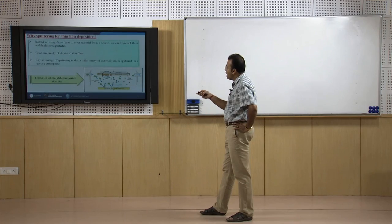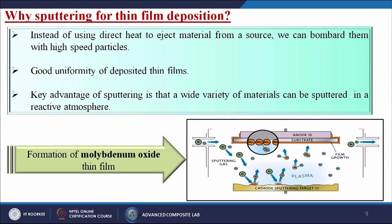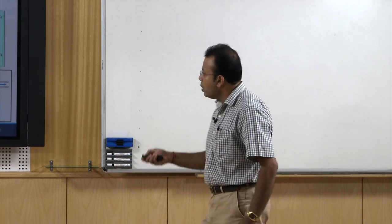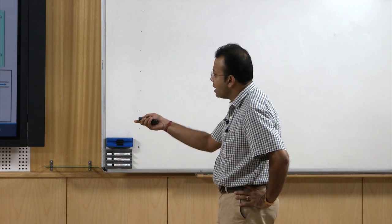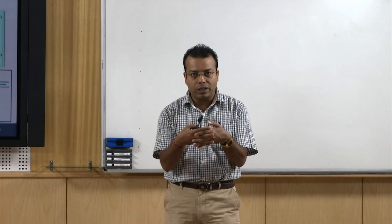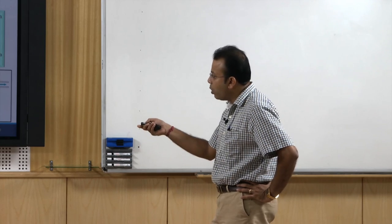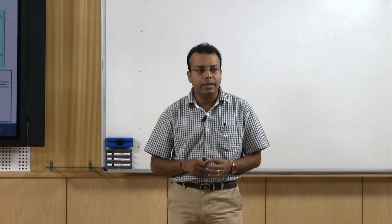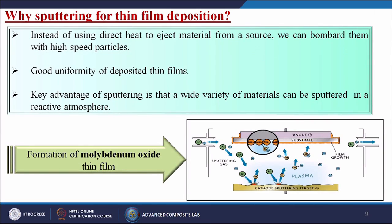Another key advantage of sputtering is that a wide variety of materials can be sputtered in a reactive atmosphere. For example, molybdenum oxide thin films: argon gas is introduced into the chamber and hits a cathode sputtering target, releasing molybdenum particles that deposit onto the substrate. An oxide layer is added, releasing oxygen; molybdenum from the target and oxygen react together, forming molybdenum oxide, which then deposits onto the substrate. This is called reactive sputtering techniques.